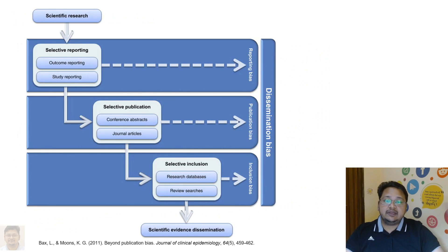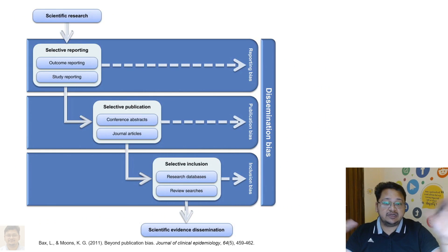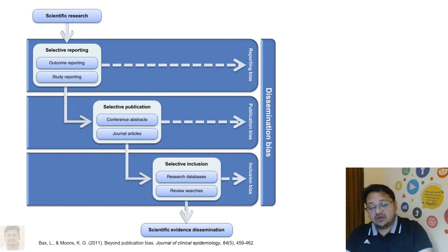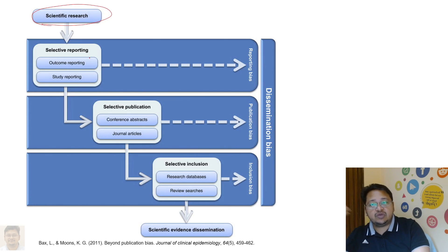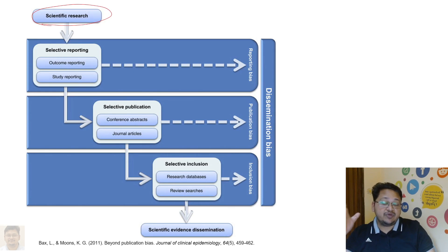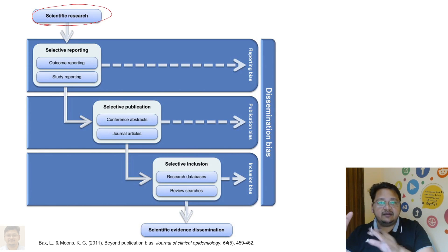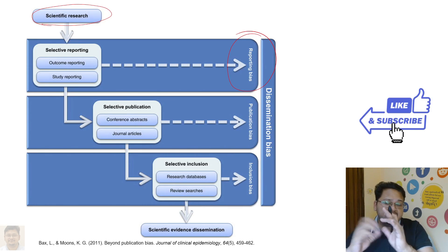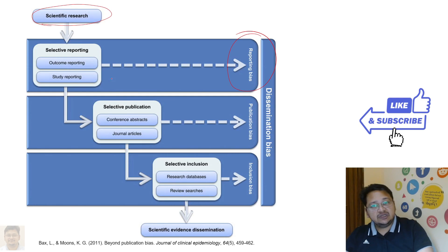When we talk about research evidence dissemination and disseminating research findings, selective reporting comes into play. Once you have selected a portion or frame of a dataset that you choose to report or study, that will lead to reporting bias. It is a kind of selective or fragmented work that you are looking into and producing your results on.